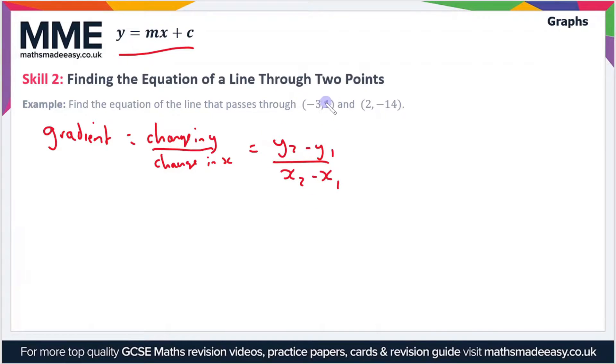If you're not sure about this, check out our video on calculating the gradient. Otherwise, let's say that this coordinate here 2, negative 14 is going to be x2, y2 and negative 3, 1 is going to be x1, y1.